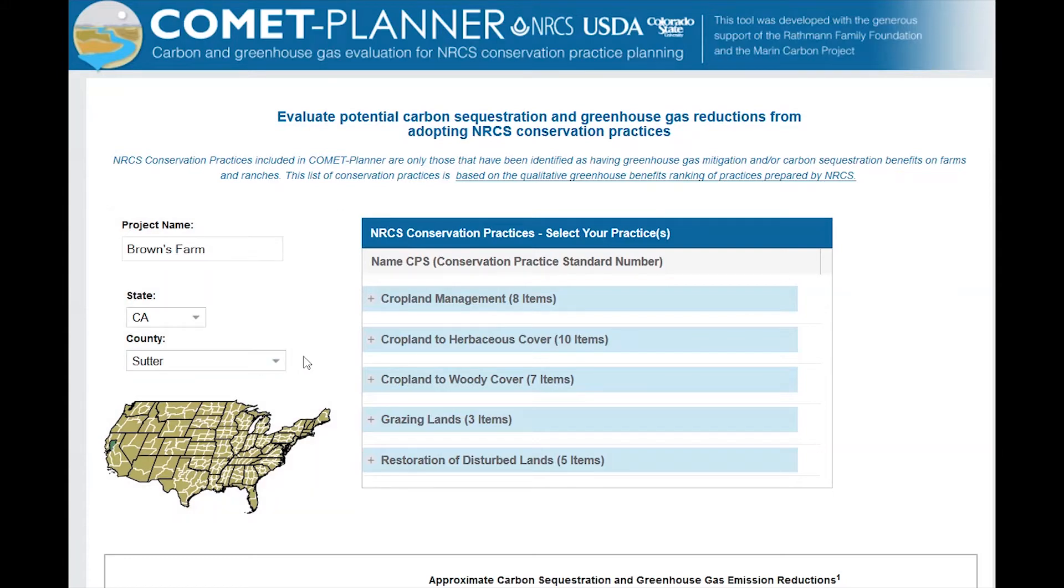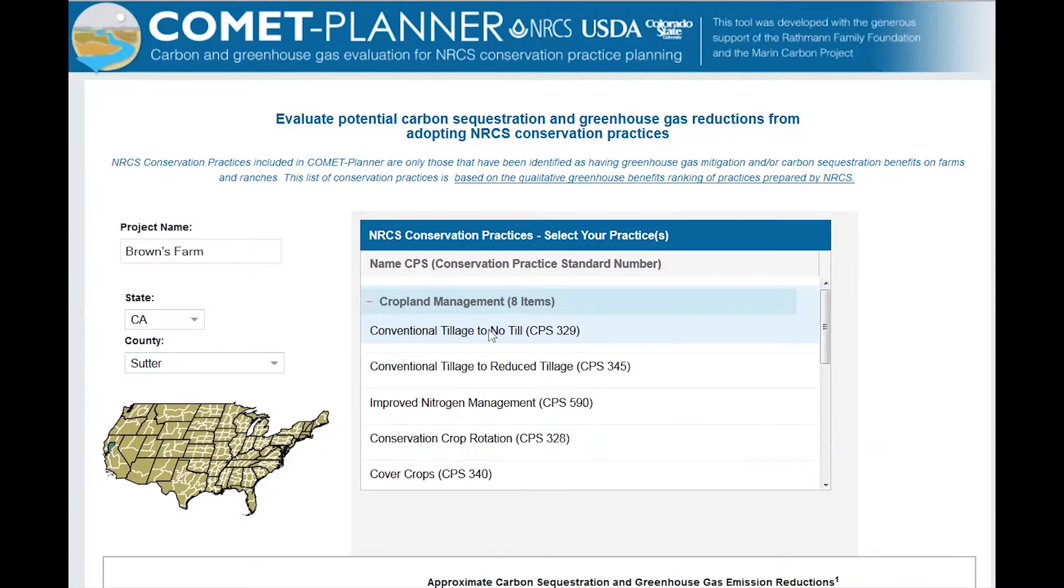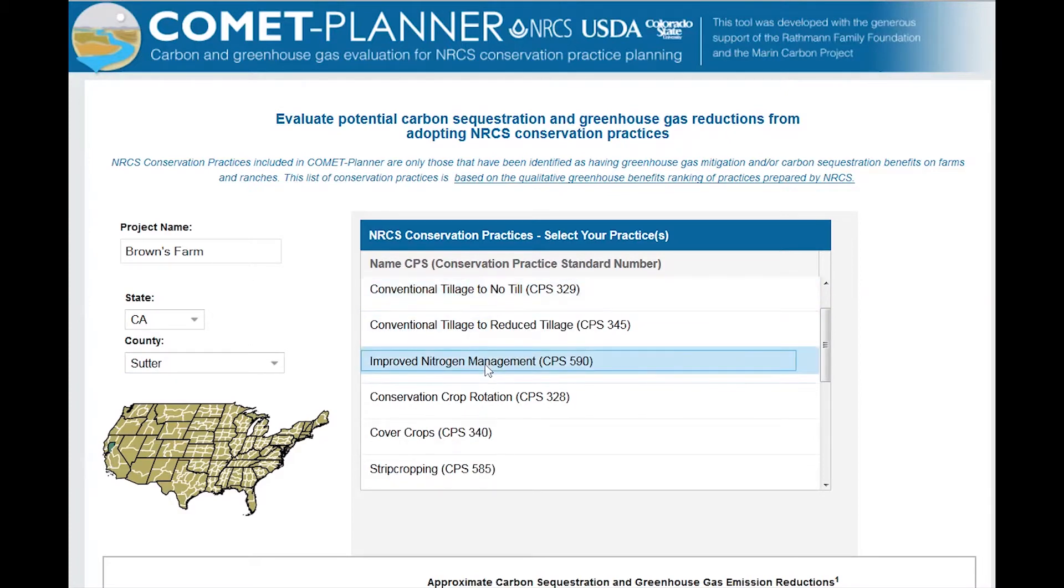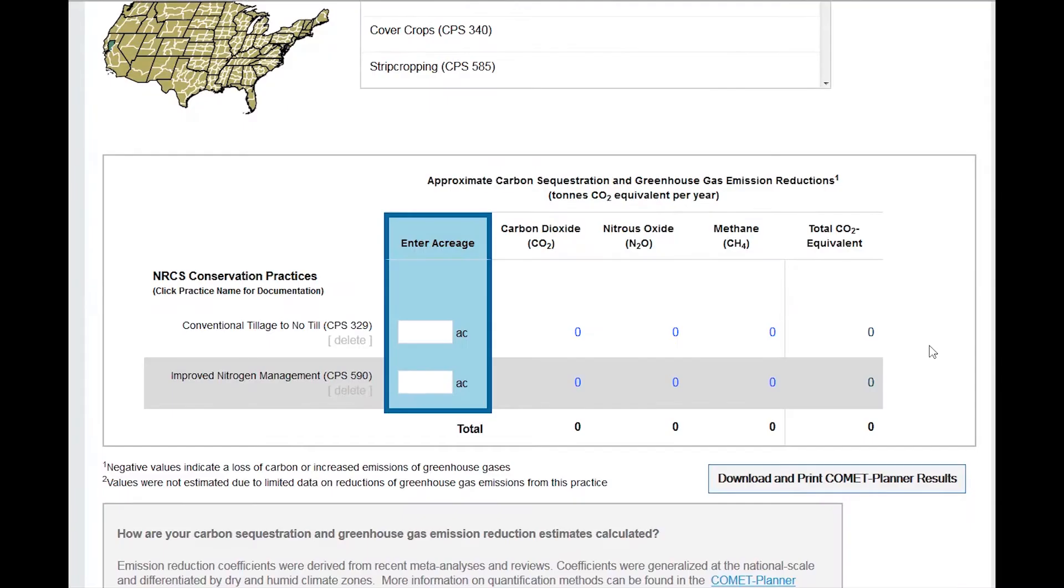Once the project information is entered, the conservation practice standard from the list on the right can be selected. Similar conservation practice standards are grouped into broad categories. The name of the practice along with the corresponding conservation practice standard number is provided. Clicking on the desired conservation practice standard will add it to the table below. Conservation practice standards can be removed by clicking the delete button under the conservation practice standard number.